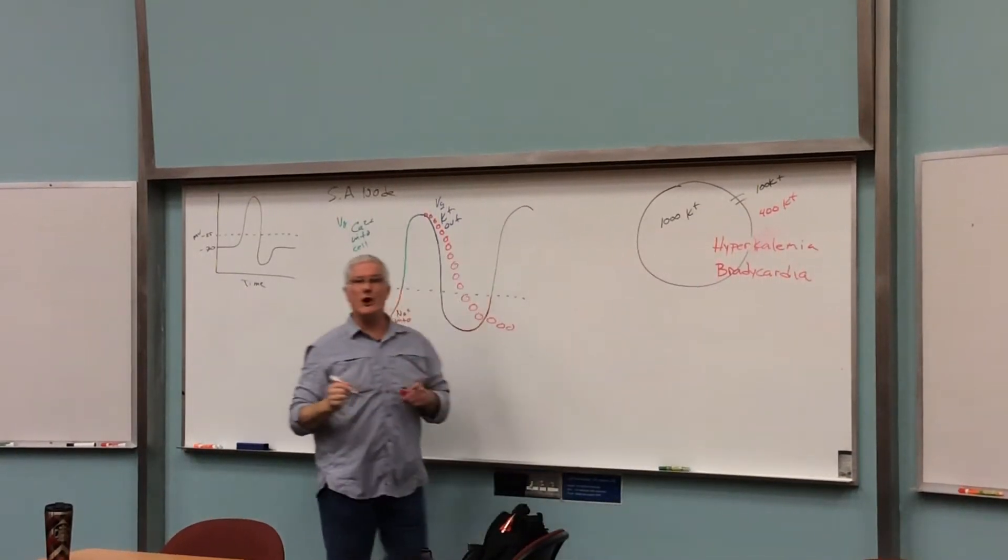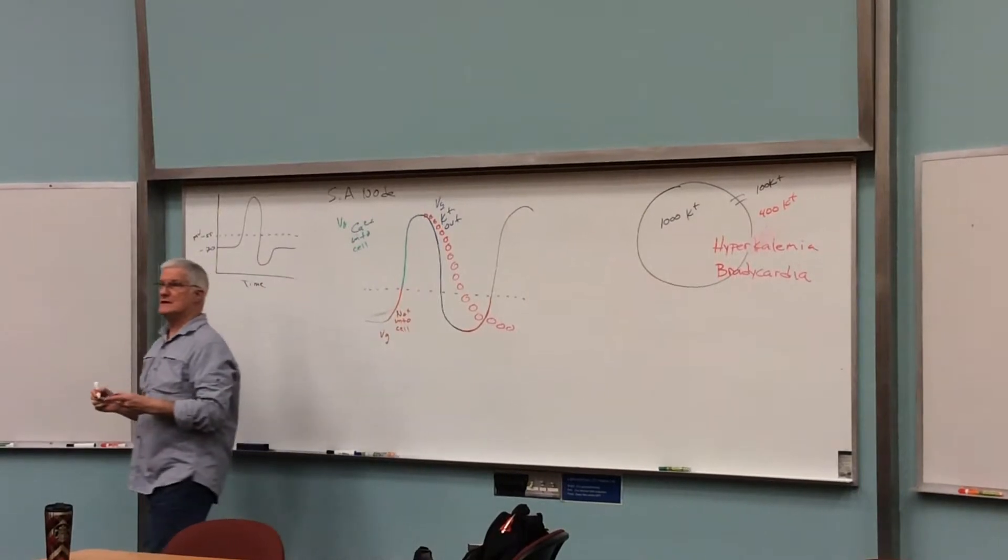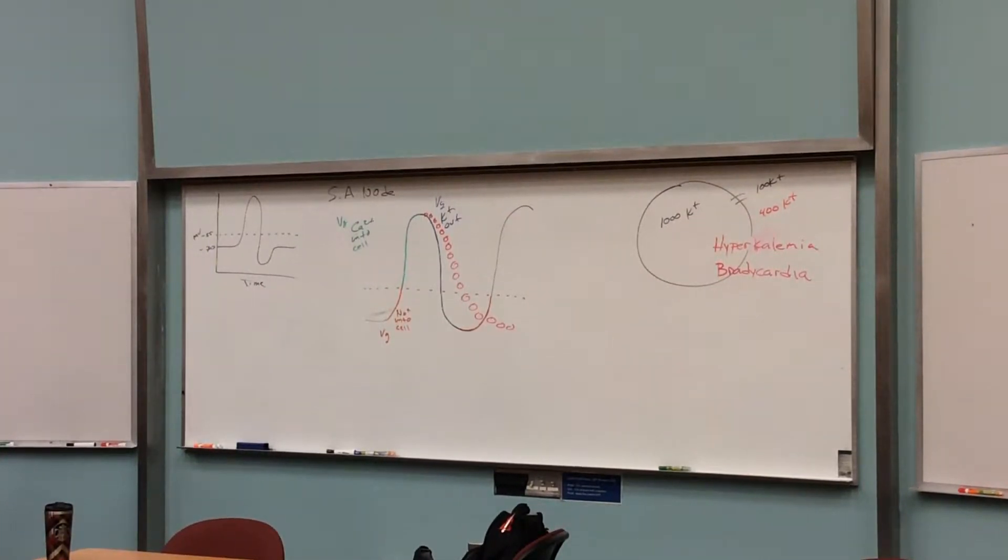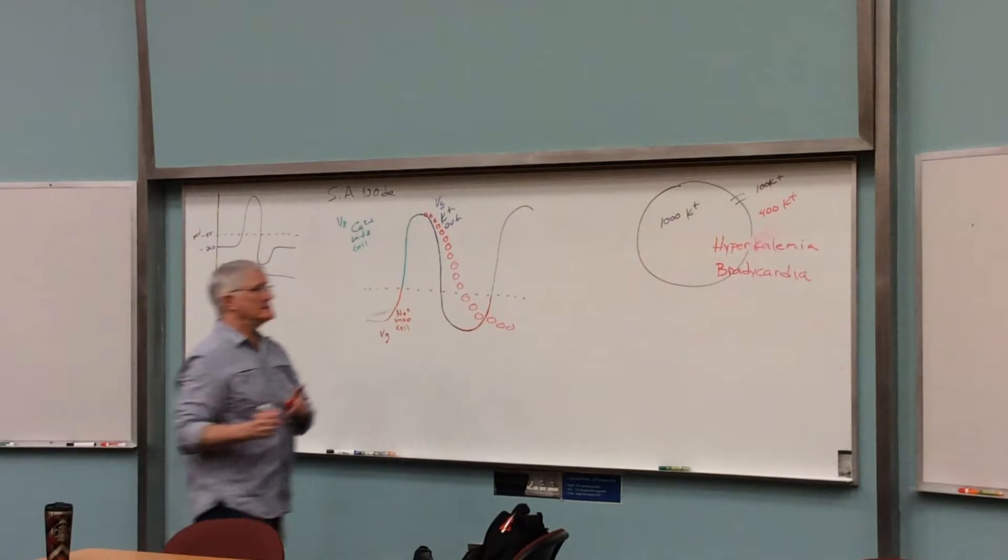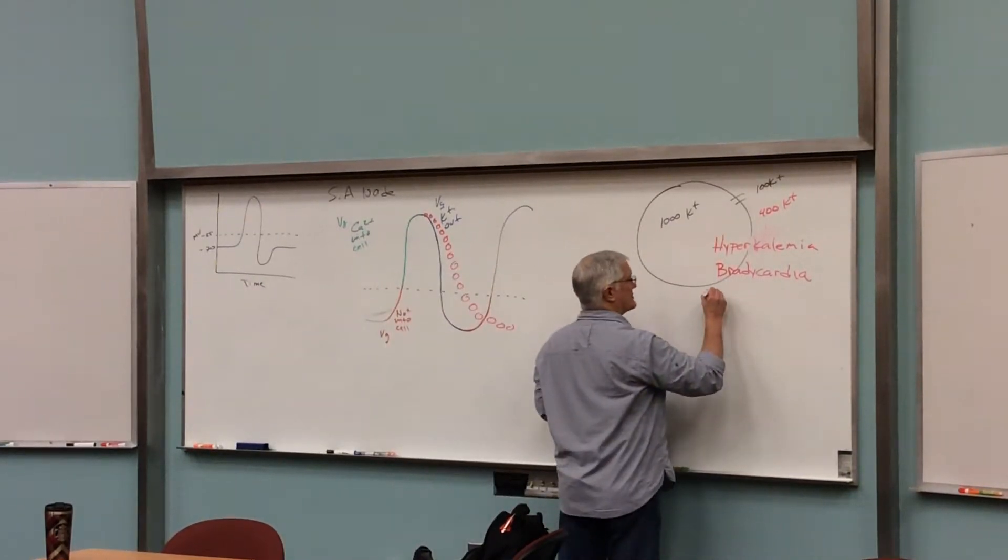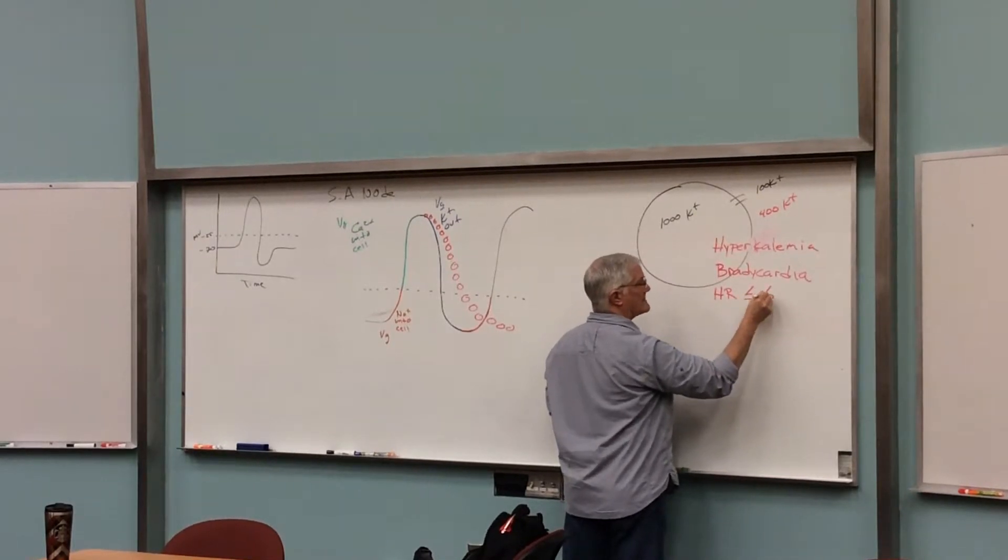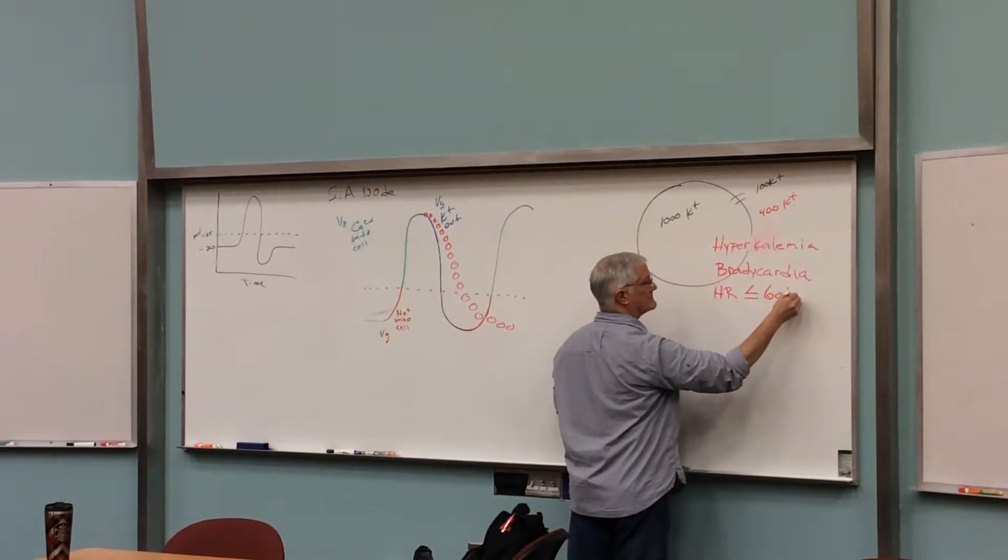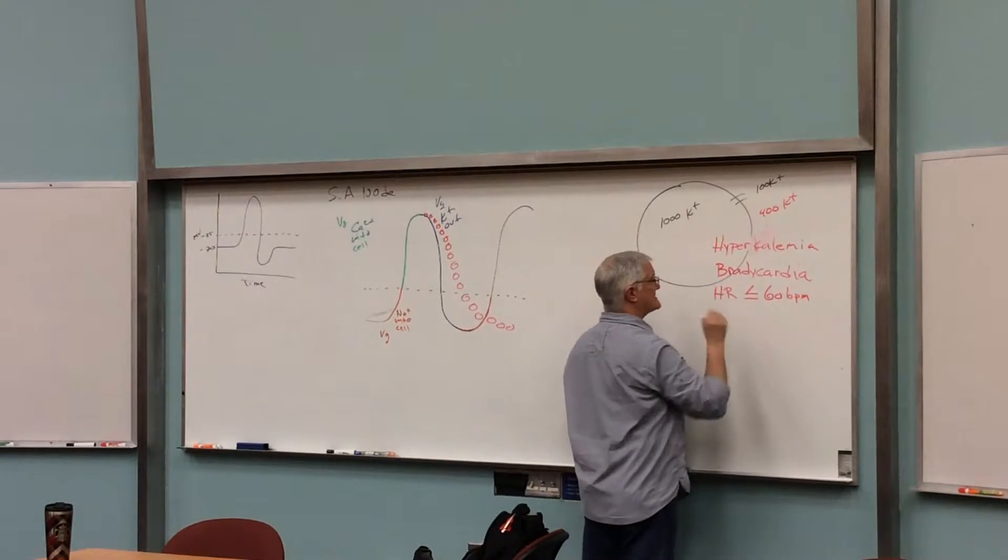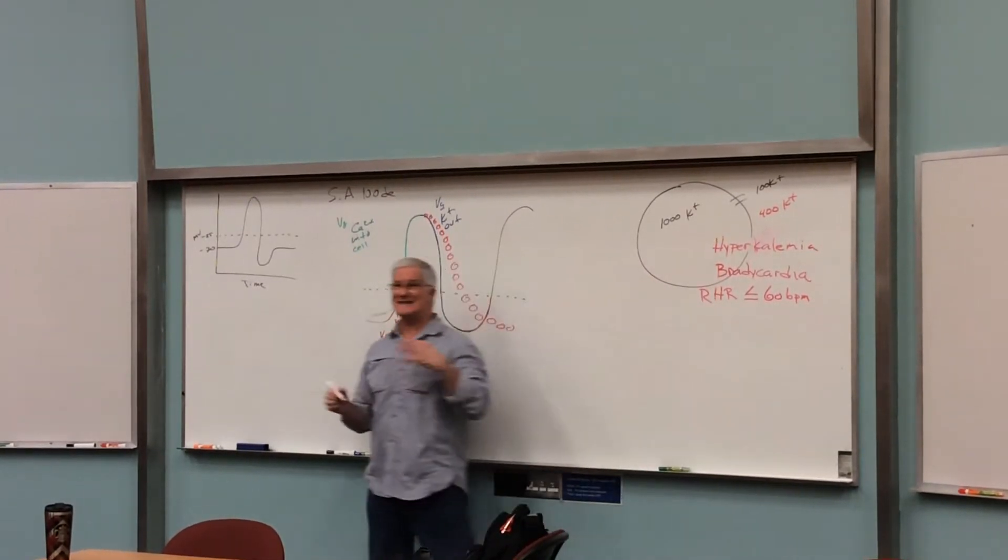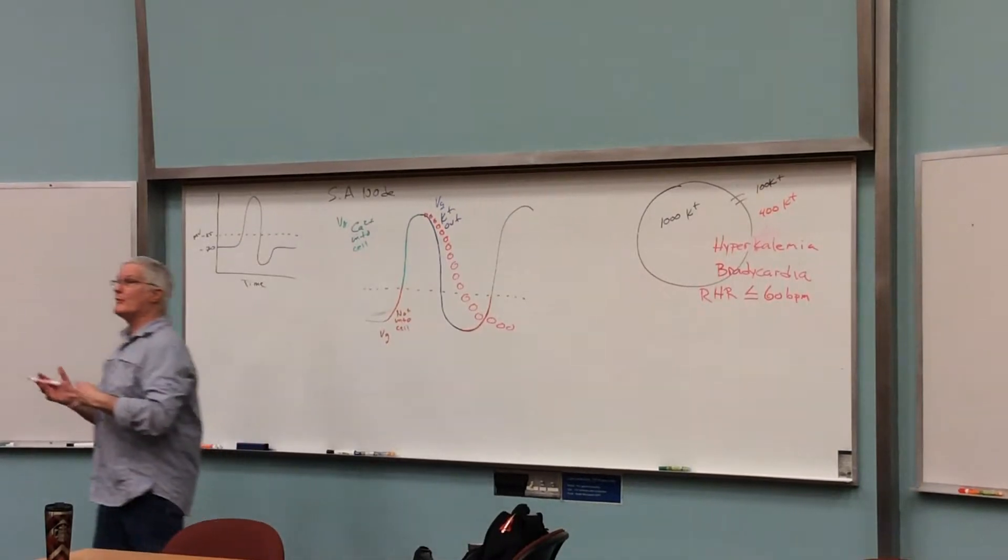Hyperkalemia will then lead to a condition called bradycardia, which means a slower than normal heart rate. Slower than normal resting heart rate. But there's a specific definition for bradycardia. Bradycardia is going to be a heart rate, a resting heart rate, less than or equal to 60 beats per minute.